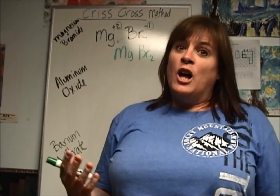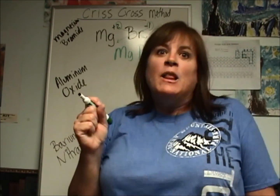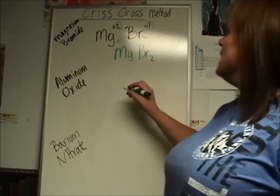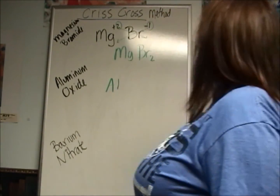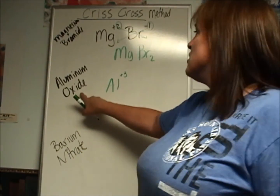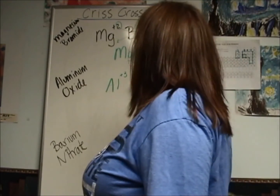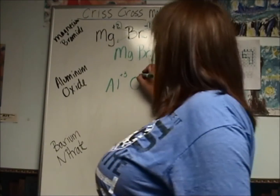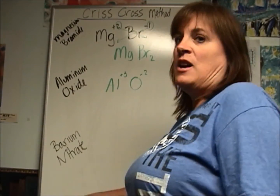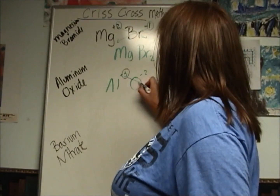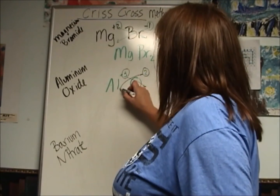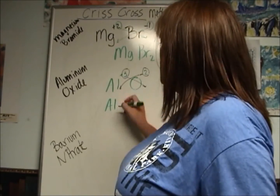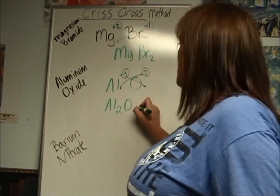Let's take a look at a trickier one, aluminum oxide. Aluminum is on the periodic table in group 3: the symbol is Al and it's a plus 3. Oxide is oxygen, symbol O, here in group 6, and its charge is minus 2. By our crisscross method, we take the 3 and put it with the O, and we take the 2 and put it with the Al. So when I write this, I get Al₂O₃. Let's check: 2 times 3 is plus 6, and 3 times negative 2 is minus 6 — that adds up to 0!